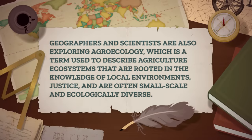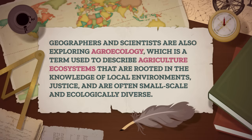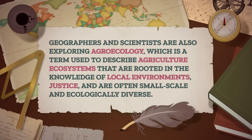Climate change will mean finding new plants, new varieties, and perhaps changing some of the foods we eat. Geographers and scientists are also exploring agroecology, which is a term used to describe agricultural ecosystems rooted in the knowledge of local environments, justice, and that are often small-scale and ecologically diverse. Given how much agriculture is currently focused on exporting food rather than feeding local communities, it's unlikely there will be a mass shift to agroecology anytime soon. But there are so many people on the planet that we will need a diverse portfolio of agriculture practices to feed everyone. There are movements to change how farmers finance their costs, like microloans and co-ops, which may or may not help depending on the country.